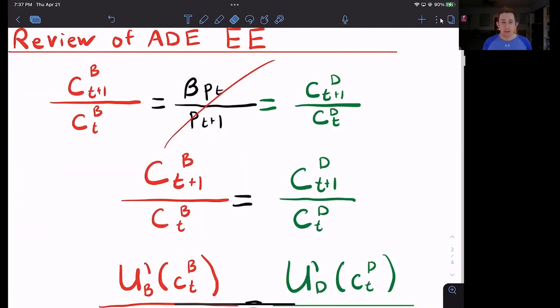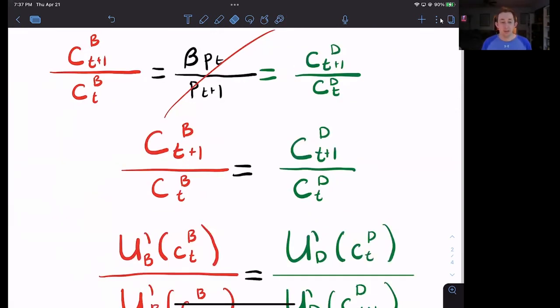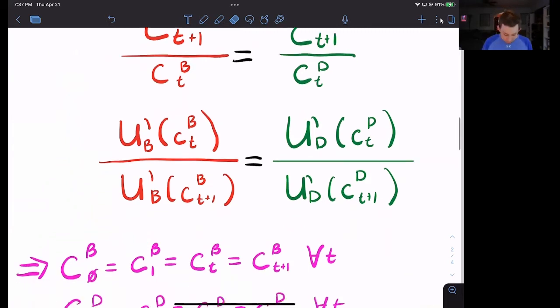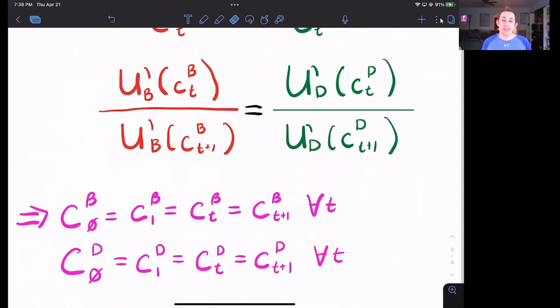In that Arrow-DeBrew equilibrium-Euler equation, or ADEEE for short, we had that the ratio of Bill's consumption tomorrow versus today was equal to Dave's consumption tomorrow over Dave's consumption today, which more generally is just the marginal utility of Bill's consumption today over the marginal utility of Bill's consumption tomorrow. And that's exactly equal to the marginal utility of Dave's consumption today over the marginal utility of Dave's consumption tomorrow. And from this, we got to the point that Bill eats the same number of coconuts every day, and so does Dave for all time.